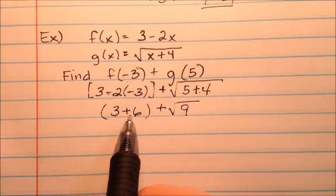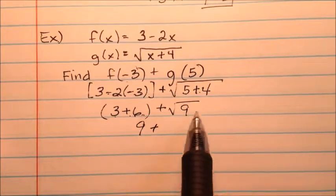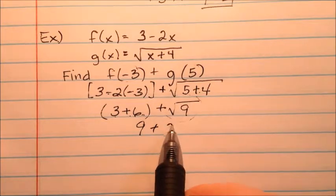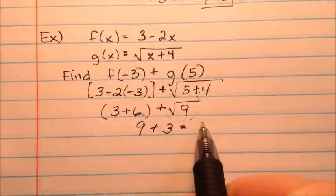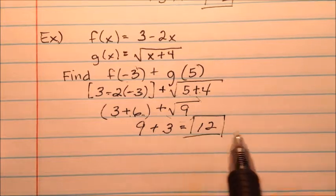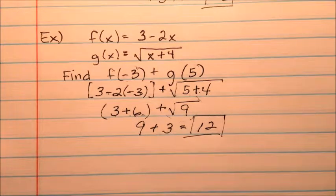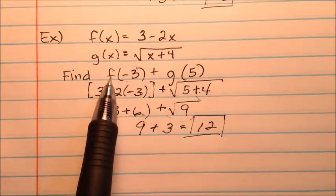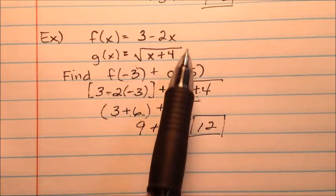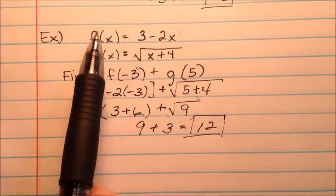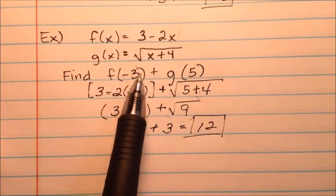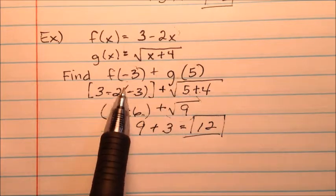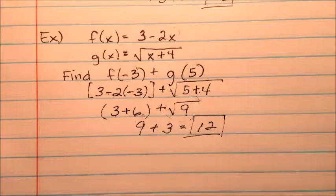And then plus the square root of 5 plus 4 is 9. So 3 plus 6 is 9, plus the square root of 9 is 3, so 9 plus 3 will be 12. So the operation of functions here, f(-3) + g(5), will use these two function definitions, find the respective values, and then simplify, so we get 12 for that example.